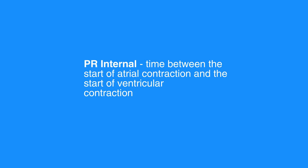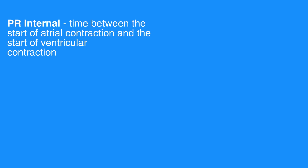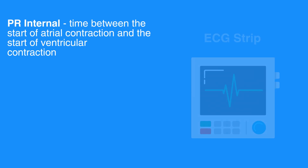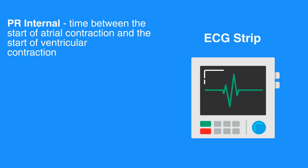The time between the start of the atrial contraction and the start of ventricular contraction registers as the PR interval on an ECG strip. The ventricular contraction registers as the QRS complex.